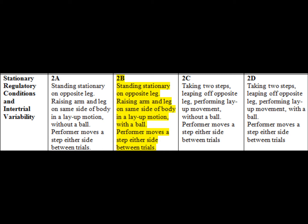2B involves standing stationary on the opposite leg, raising your arm and leg on the same side of the body in a layup motion with a ball. The performer moves a step either side between trials directed by the coach. This is suited for the associative phase of motor learning and is a closed loop, as getting a basket provides feedback to the performer on whether they have executed the skill correctly.